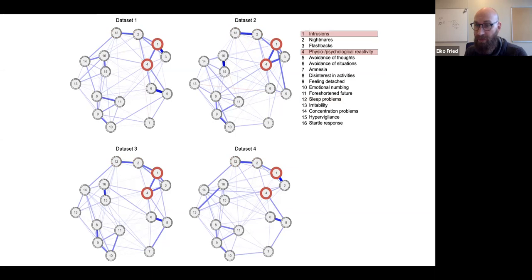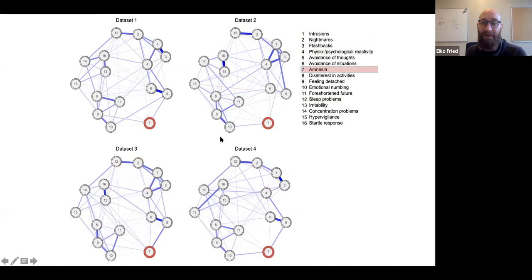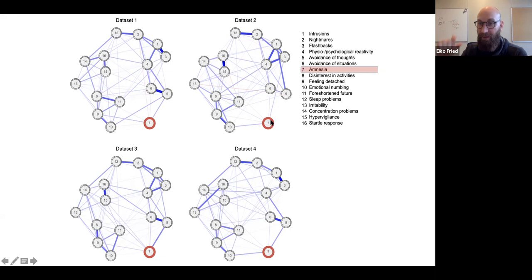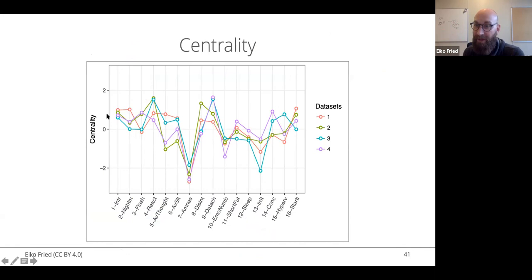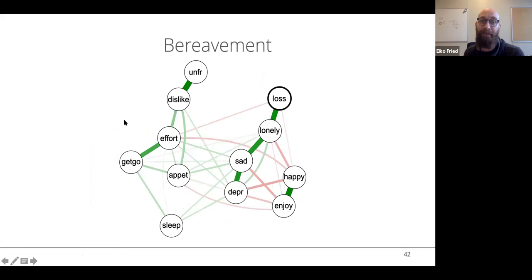Some relations are absent in dataset four, which consists of refugees with very severe, type-two trauma, about a third of whom have psychotic symptoms — very different from the third dataset of mostly white, male, less severely traumatized military veterans. Amnesia is the least connected node across datasets. Interestingly, connectedness in the network model is quite similar to a factor loading in a factor model, and you can estimate centrality — how connected a variable is in the overall network structure.